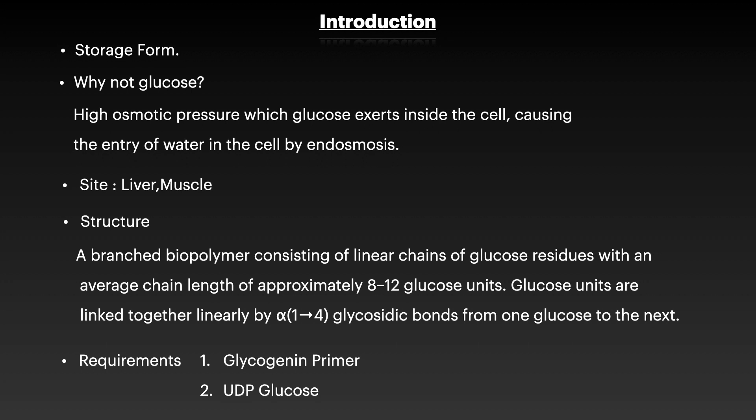Also, glycogen is a branched structure, therefore it can give energy rapidly whenever needed — hence the body performs glycogenesis. The site of glycogenesis is the liver and muscle. Muscle has the highest amount of glycogen content overall, whereas liver has the highest amount of glycogen content per gram percent of tissue weight.